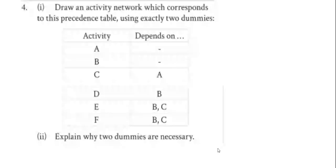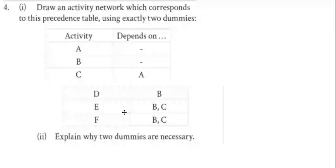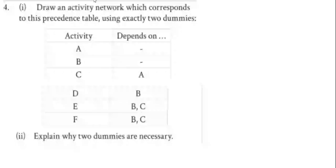This problem asks us to draw an activity network which corresponds to the precedence table using exactly two dummies. So it tells us how many dummies we're going to use, and we need to explain why the dummies are necessary. Okay, that sounds pretty fun. We're going to start off with a zero as the first node.